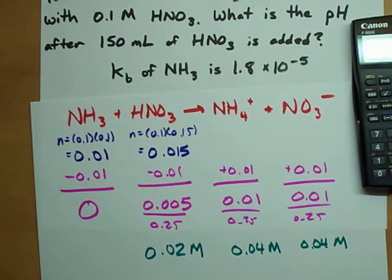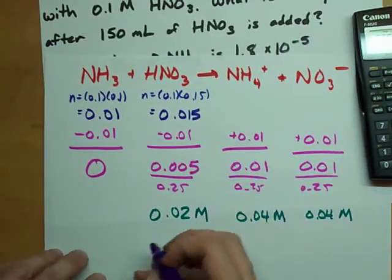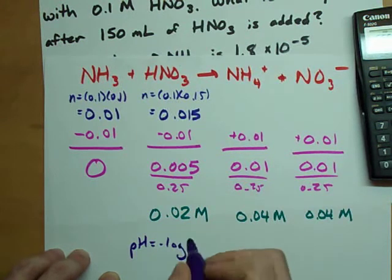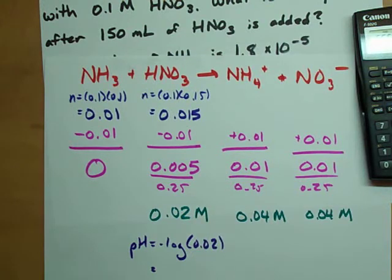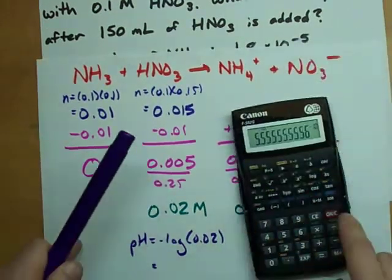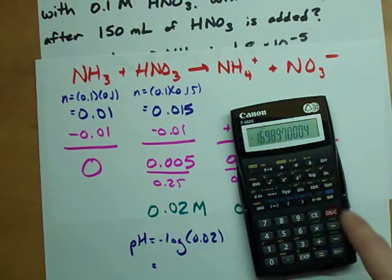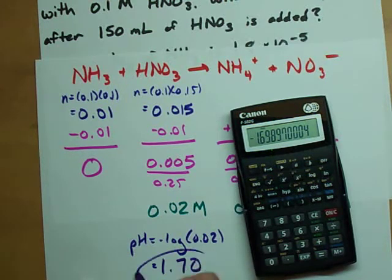So your quick and dirty way to get the pH of this resulting solution is that the pH is negative log of your acid concentration, which in this case is 0.02. And the negative log of 0.02 is 1.70. There is your pH right there.